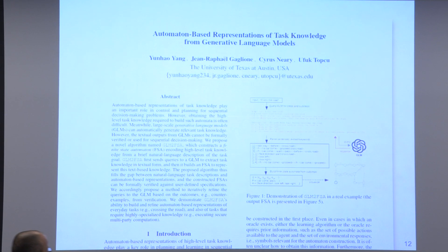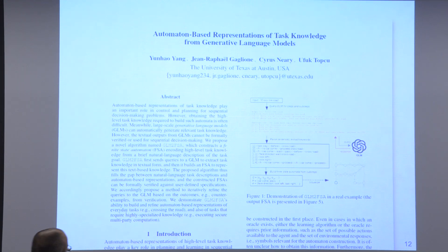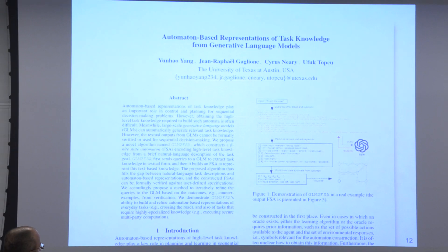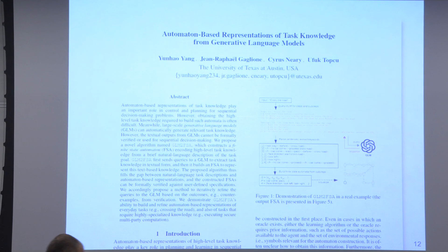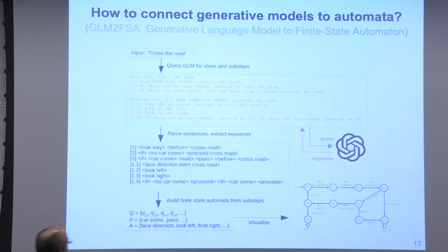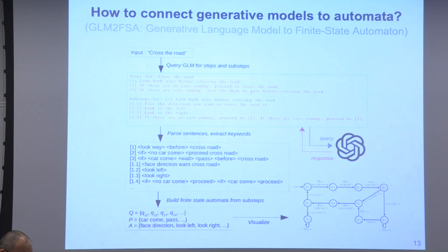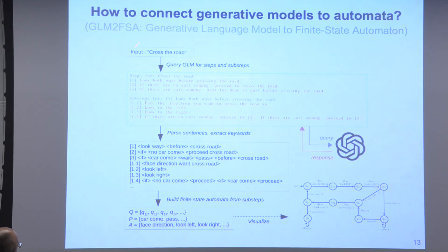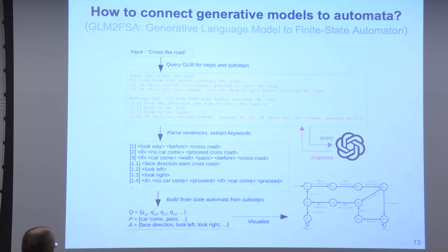The first paper is about automata-based representations of task knowledge from generative language models. We start with a very terse description of what we expect out of the system — for example, 'cross the road' — instead of trying to write long specifications. Sending that to GPT-3 gives a step-by-step description, and then we parse that into simpler sentence structures that we can relate to a finite state object.